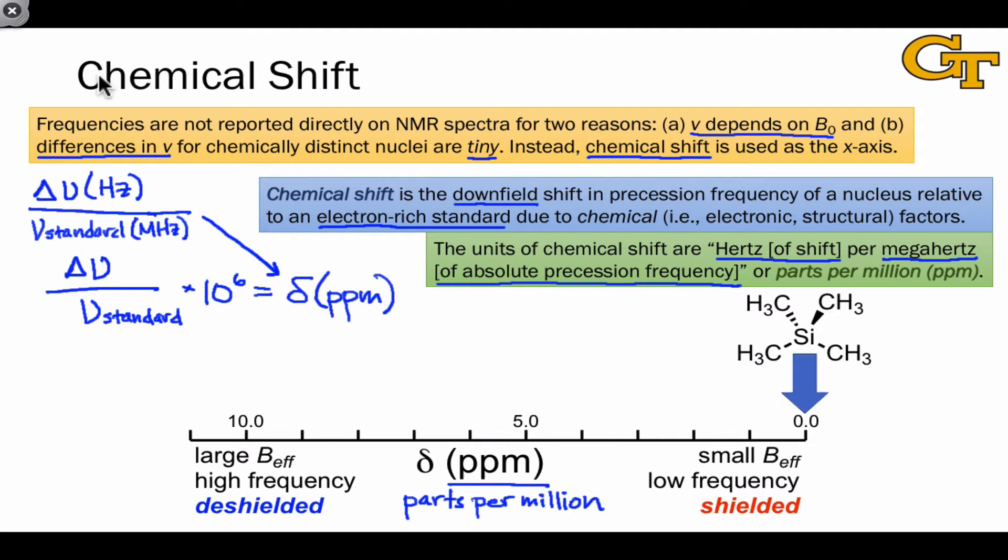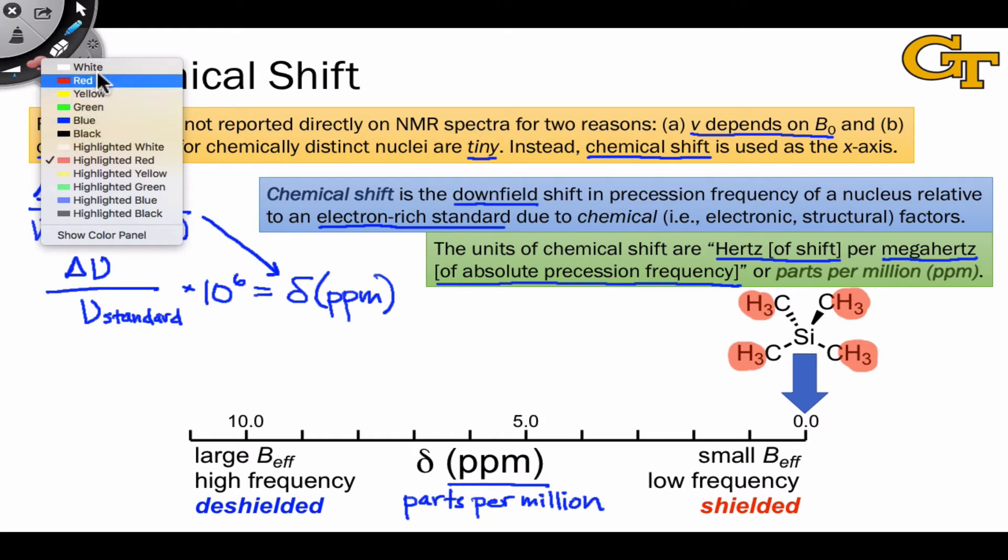The standard for proton NMR is a compound with heavily shielded hydrogens. Because silicon is electron donating, the hydrogens in these four methyl groups are relatively shielded, appearing upfield at low frequency. The other advantage is that it has 12 hydrogens per molecule, giving a large signal.